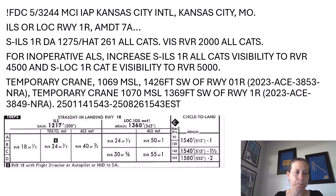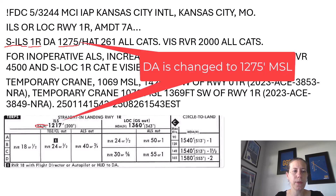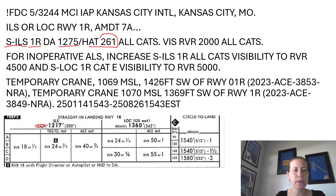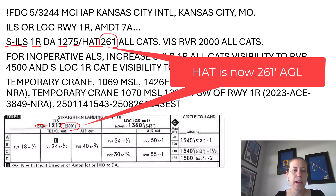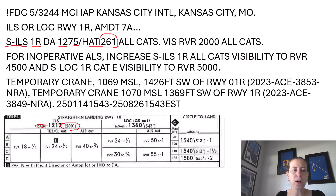Assuming it does apply, let's keep going. What this says is that on the straight-in ILS to Runway 1 Right, the decision altitude has been increased to 1,275 feet MSL. Height above touchdown is now 261 feet AGL — so instead of 200 feet above ground level, it's 261. And this applies to all categories.